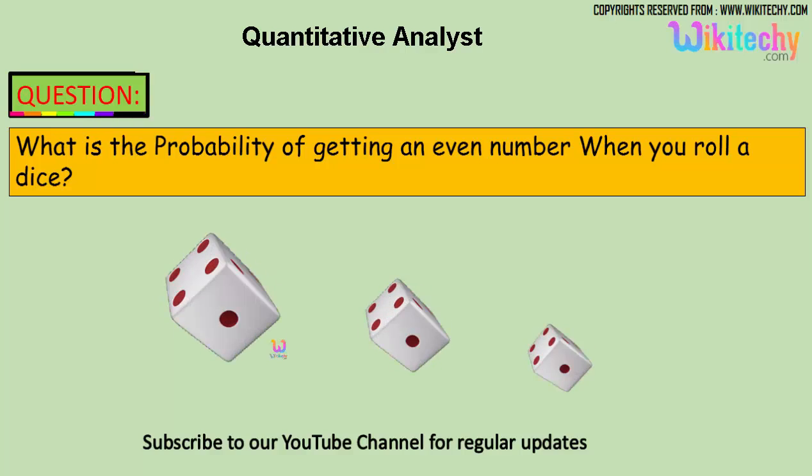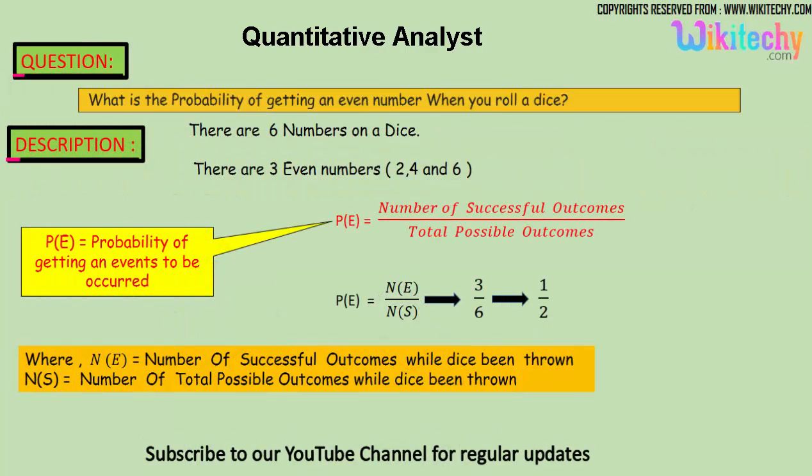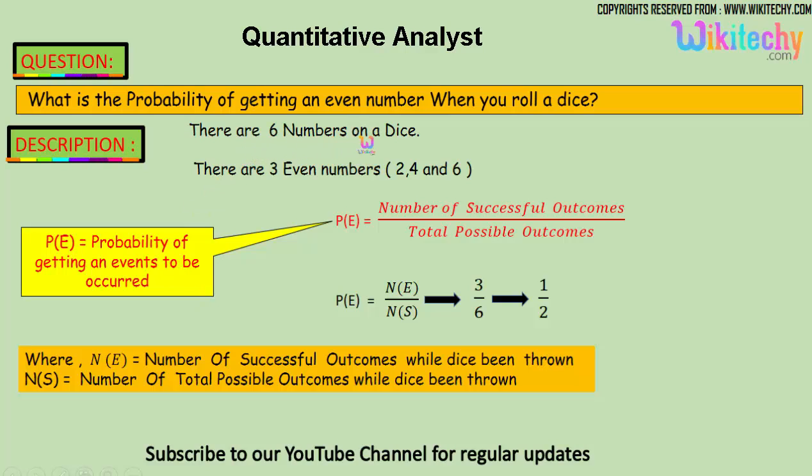And what is the probability of getting an even number? That is the question. The answer is: there are six numbers on a dice and we have three even numbers: two, four, and six. So here is the formula: probability of getting an event equals the number of successful outcomes divided by the total possible outcomes.